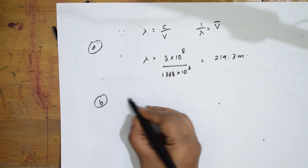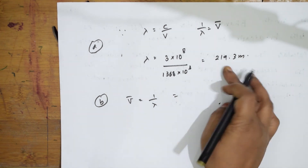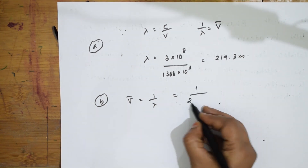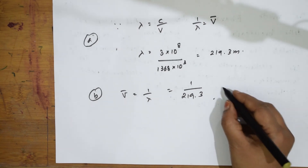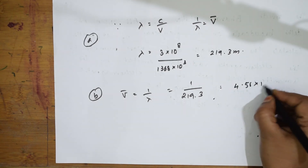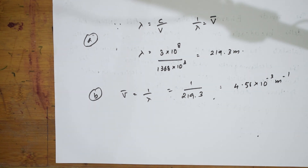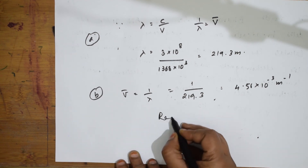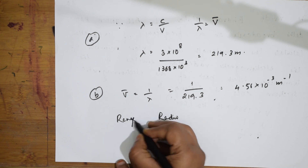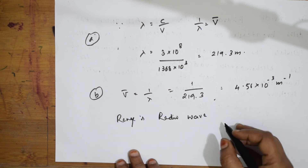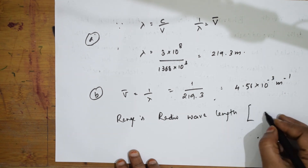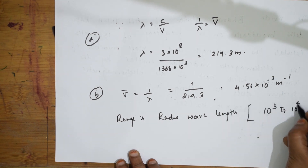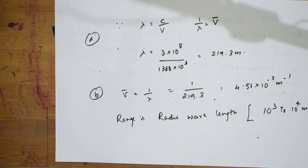Wave number ν̄ = 1/λ = 1/219.3 m⁻¹. The wavelength of ~219 m falls in the radio wave range, which varies from 10³ to 10⁴ meters. So this radiation belongs to the radio wave region of the electromagnetic spectrum.